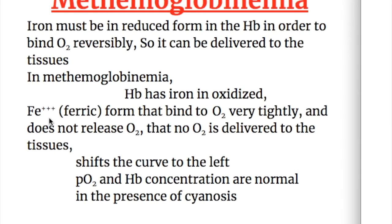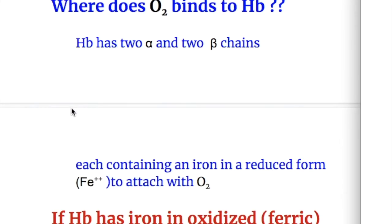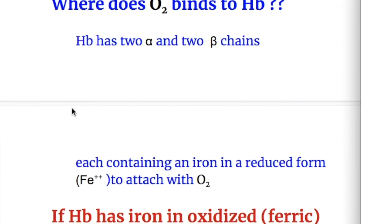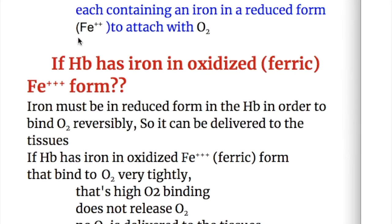Methemoglobinemia. Hemoglobin has two alpha and two beta chains, each containing an iron in a reduced form — the ferrous form — to attach with oxygen.